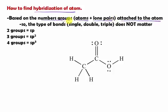Because we are focused on the group, which include either atoms or lone pair, we can ignore the type of bonds. So, single bond, double bond, and triple bond does not really matter in this case. Now, let's look at the group.